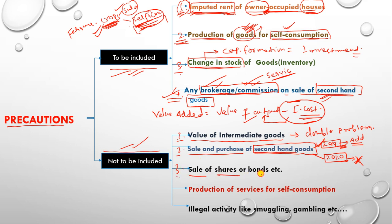The third item not to be included is the sale of shares and bonds. Shares and bonds are financial papers — they are financial transactions that normally involve the transfer of ownership from one hand to another. They have no direct connection to production, and therefore their value is not added to national income. However, brokerage paid to brokers for selling shares and bonds would be included, as that is a productive service.